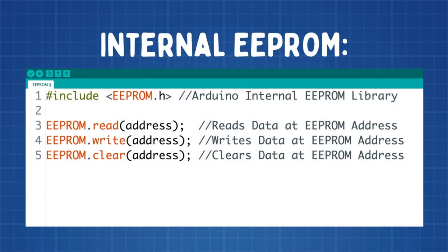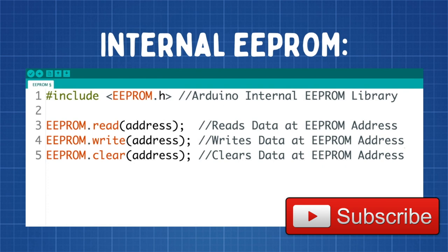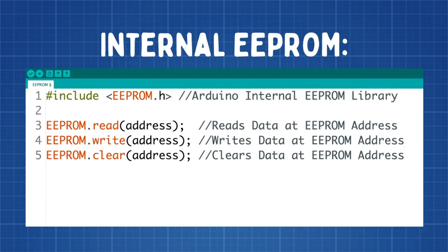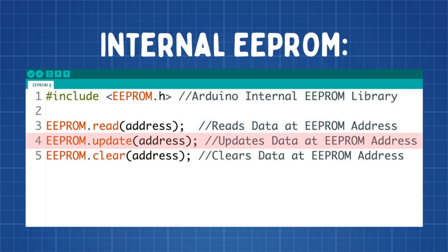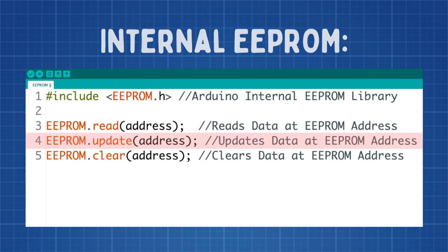In order to use the internal EEPROM, you simply need the Arduino EEPROM library and three simple functions: EEPROM read, write, and clear. As the names suggest, you can read data from the EEPROM, write data to the EEPROM, and clear all the data on the EEPROM. Although EEPROM write works, I would recommend using EEPROM update, because this method reads the EEPROM value first and then only updates it if it is different. This will minimize the number of re-writes and extend the life of the EEPROM.